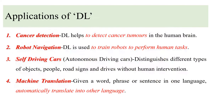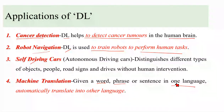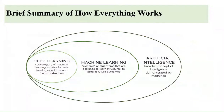Applications of deep learning include: cancer detection — deep learning helps detect cancer tumors in the human brain; robot navigation — deep learning models train robots to perform human tasks better than humans; self-driving cars; and machine translation — given a word, phrase, or sentence in one language, deep learning can automatically translate it into another language.